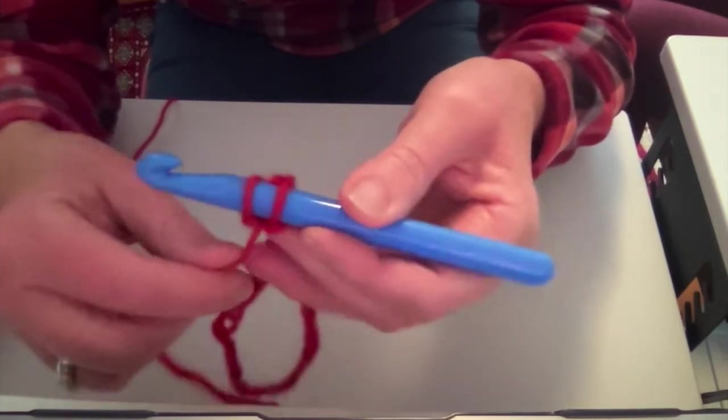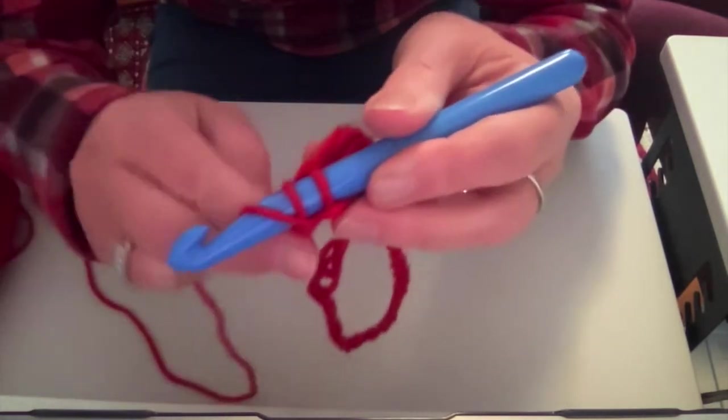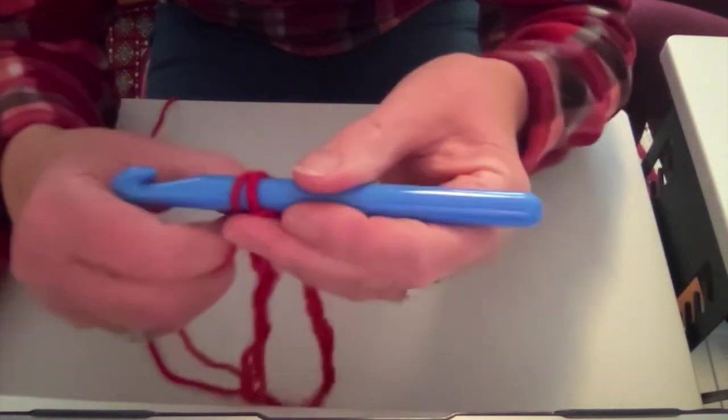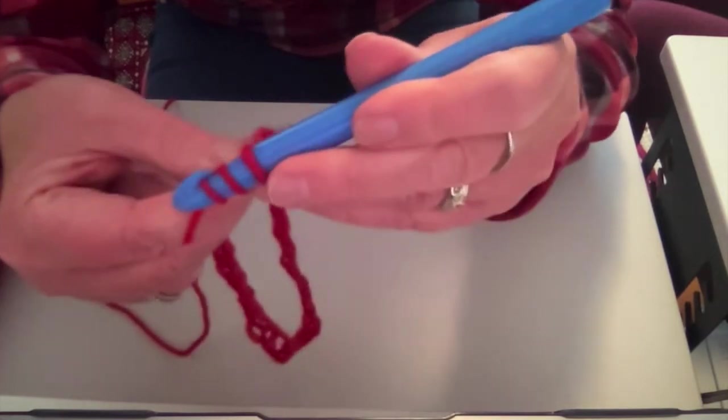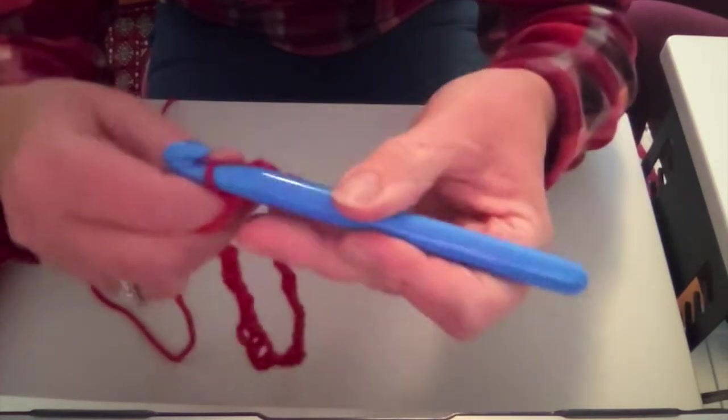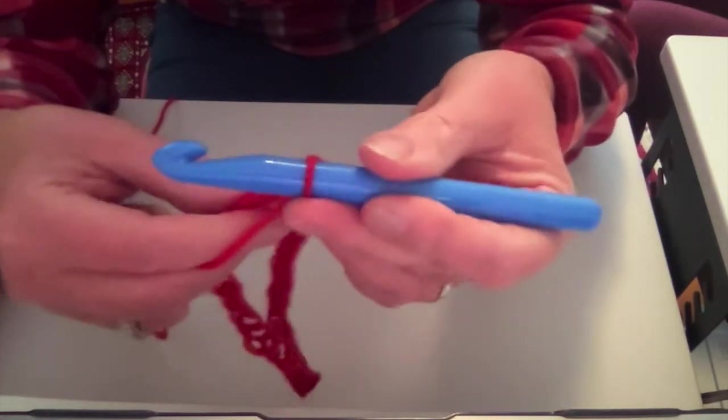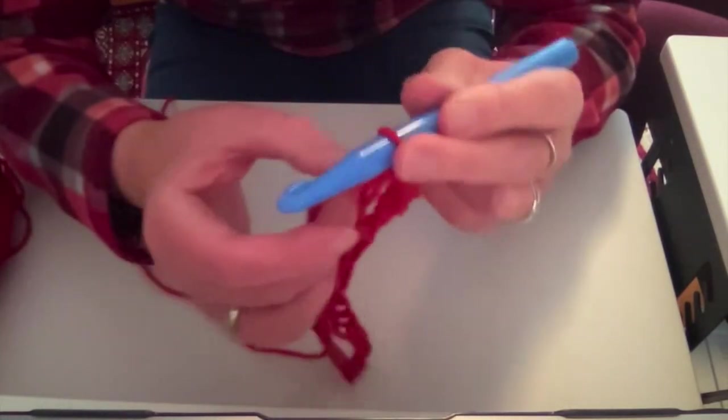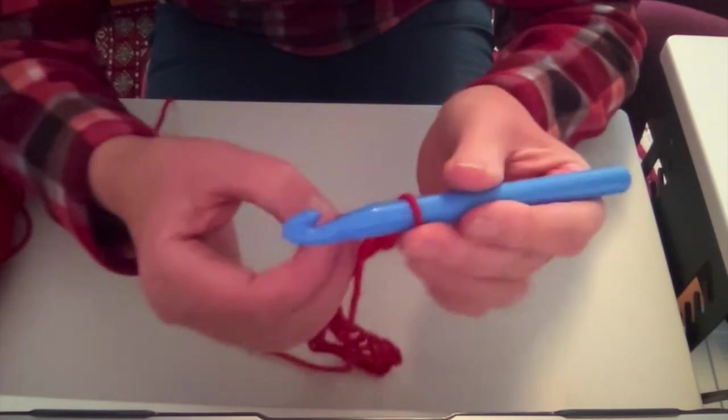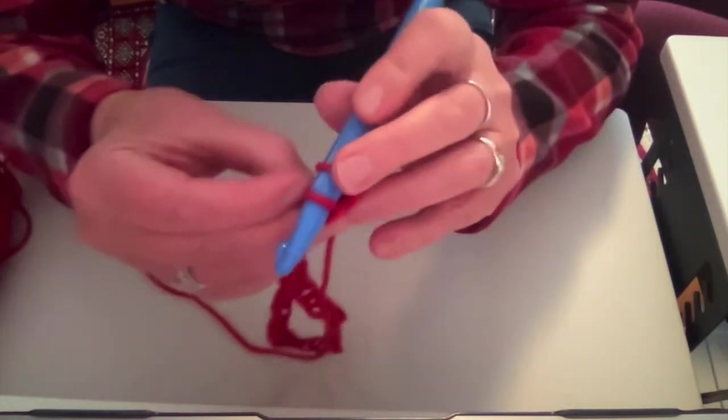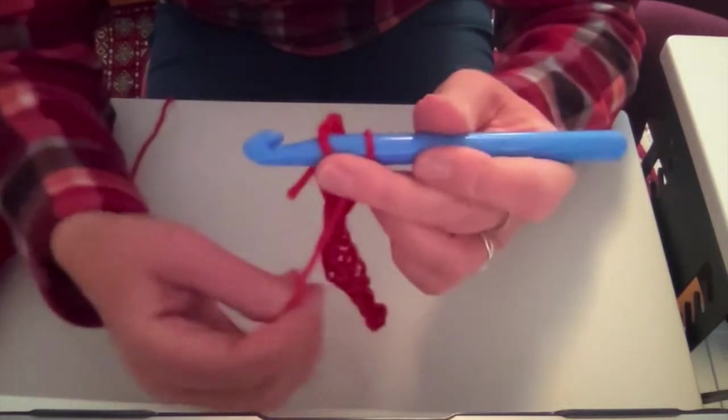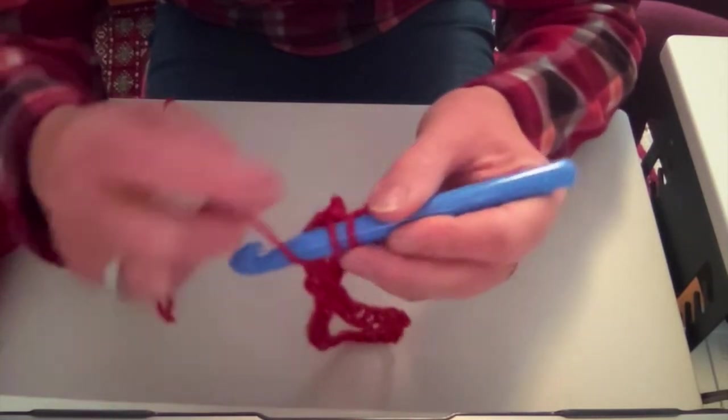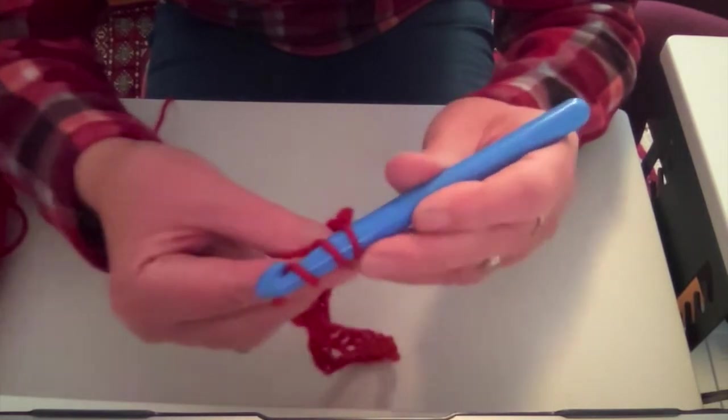So, do around one, pull through. Around one, pull through two. Now, find that loop, the next one, crochet hook in, down, around, pull out one, around, pull out two.